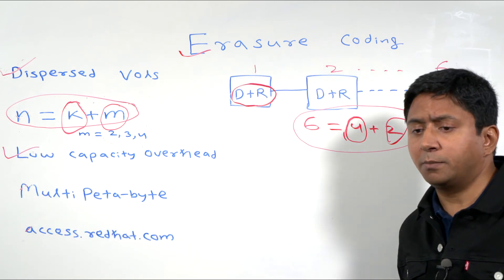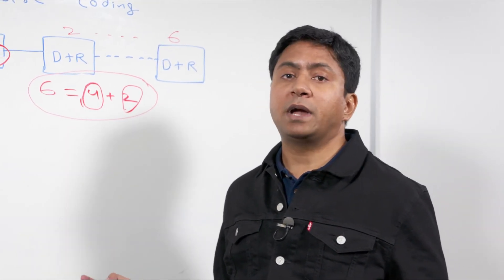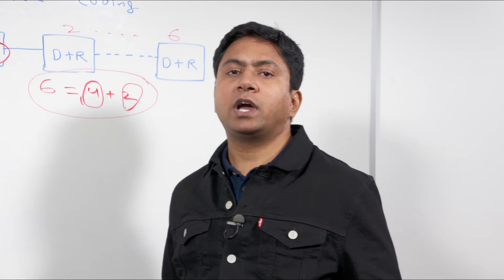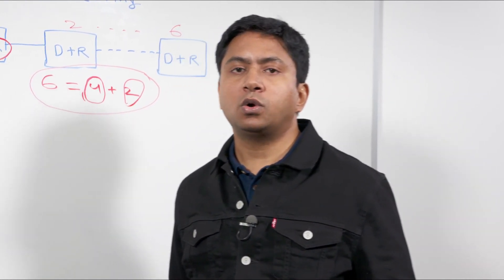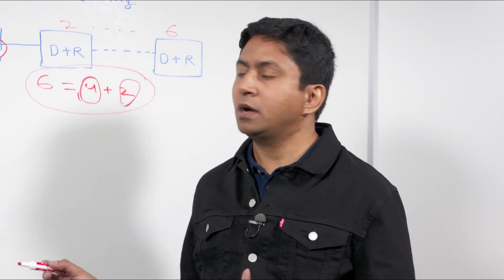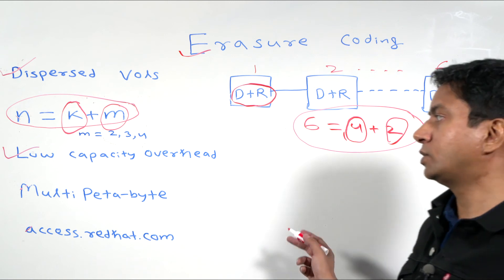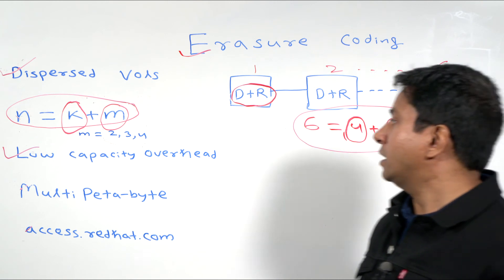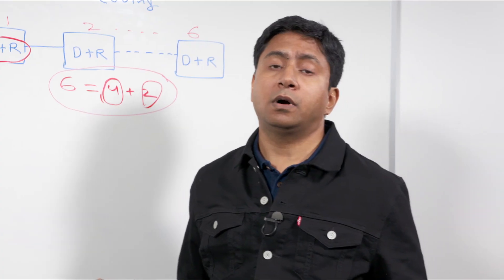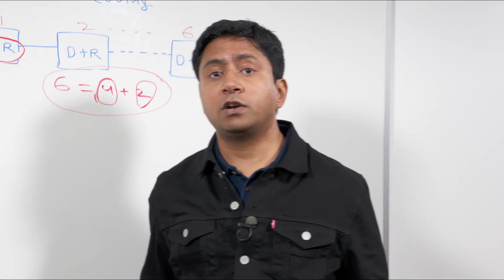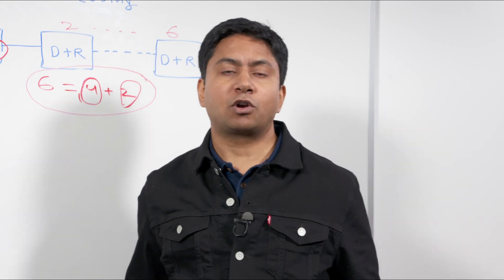Dispersed volumes or erasure coded volumes are a great fit for a multi-petabyte environment where you can have up to 6 TB disks and each node can have up to 36 disks per Red Hat cluster storage node, and you can scale out to a multi-petabyte storage cluster. If you need to know more about dispersed volumes or erasure coded volumes, you can log on to access.redhat.com and access the product documentation.